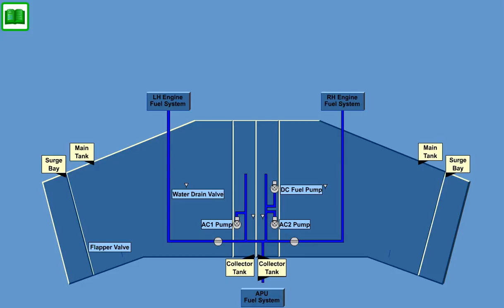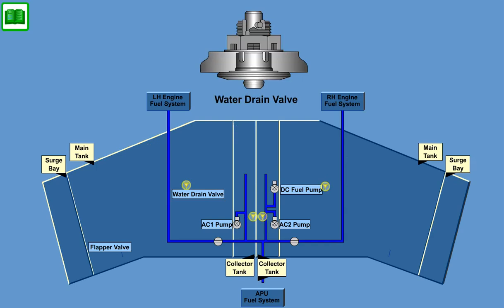Due to gravity, water inside the fuel tanks will collect at two locations in each wing. Two drain valves drain the water of the wing tank and of the collector bay. One drain valve is located next to the AC auxiliary fuel pump and the other is located close to the wing stub to wing junction.